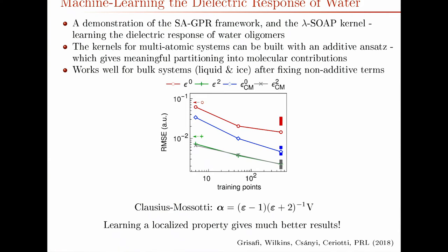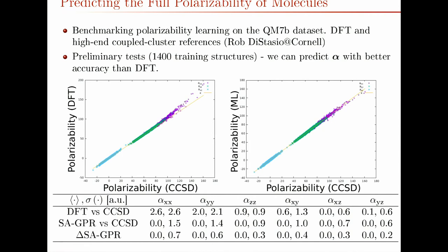I've got time to show a couple of things we're working on to take this further. The first is to benchmark the learning of polarizability. With the Distasio group at Cornell, they're doing the calculations and we're doing the machine learning. They've run DFT and high-end coupled cluster calculations for the QM7B database of fairly small molecules — 7,000 molecules. On each axis I'm showing the x, y, and z components of the polarizability calculated with CCSD. Here is the DFT calculation and here is the machine learning calculation of the polarizability. While the DFT results aren't quite on the straight line, especially at the extremes, the machine learning results match a lot better. A machine learning model is able to predict the CCSD polarizability of these small molecules much better than DFT is.